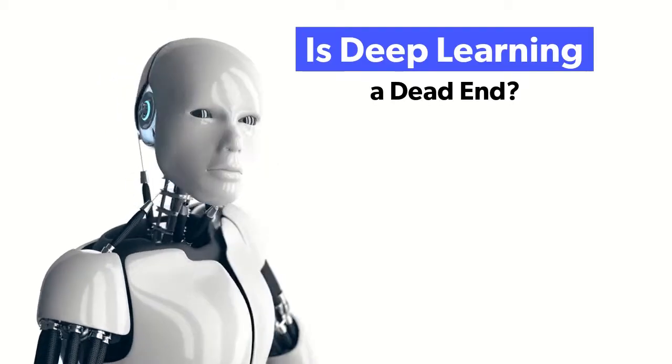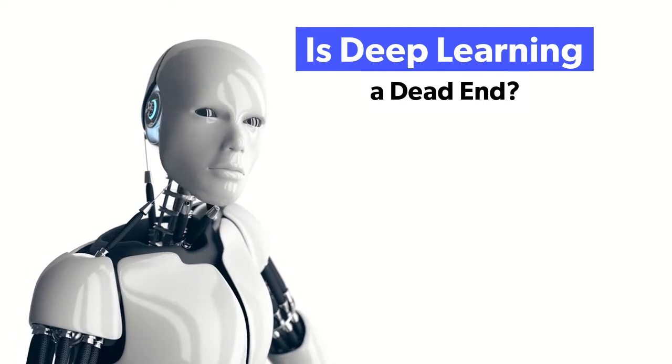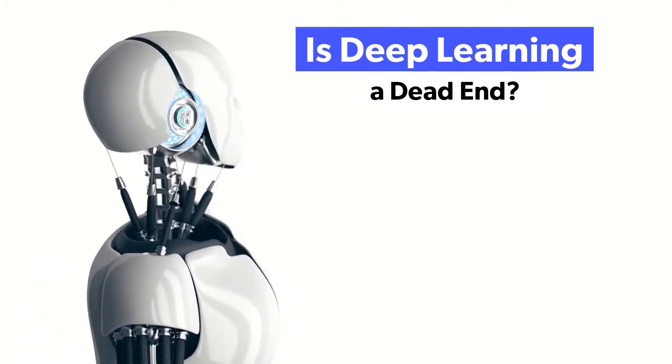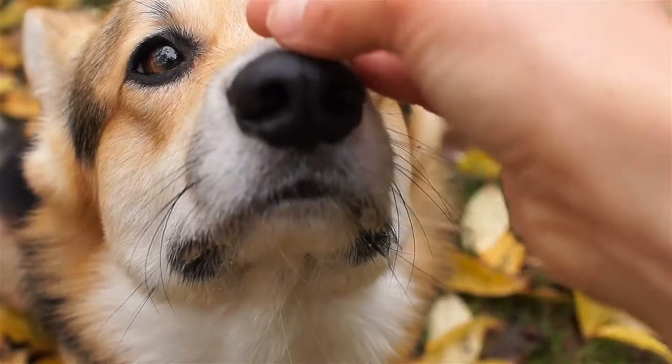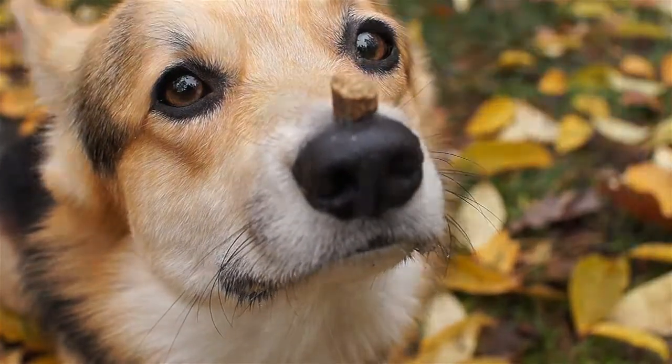While deep learning has made machine learning possible, it requires huge data sets and large computing resources. Compare this with your dog, who can learn where you put his dog treat by seeing you hide it only once. This is the chasm we have yet to bridge in machine intelligence.